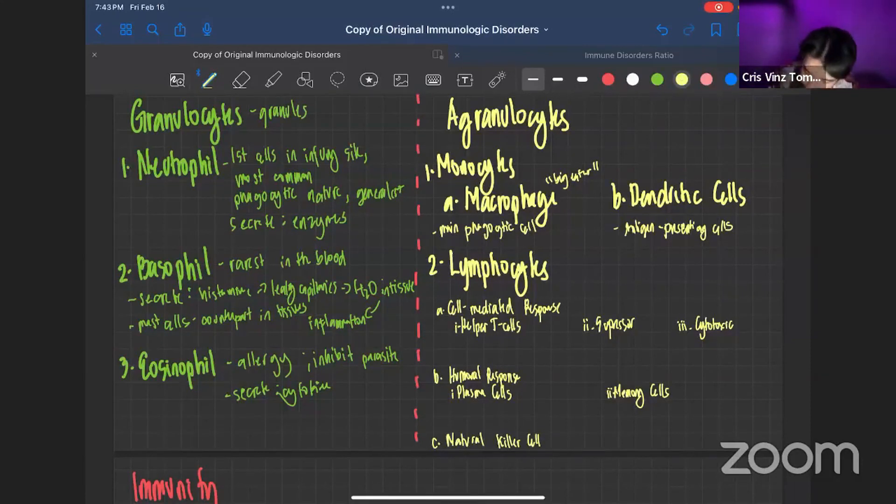In cell-mediated response, the mainly involved here is our T-cells. And we know that our T-cells mature in our thymus. They mature in our thymus. They can be divided into three types of T-cells. We have our CD4 cells, or our helper T-cells.